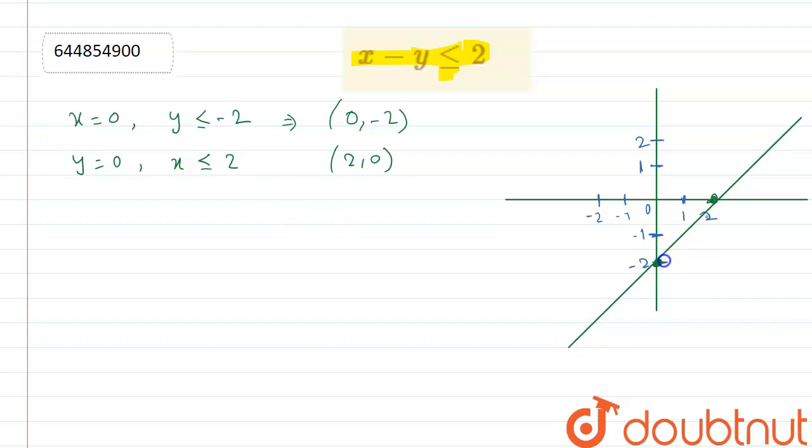So now here when we put x is equal to 0, y is equal to 0 in this equation, we see that here we get 0 is less than or equal to 2. So here we see that this equation is here true.